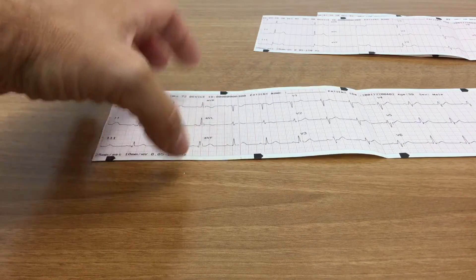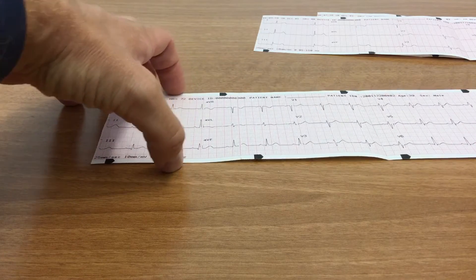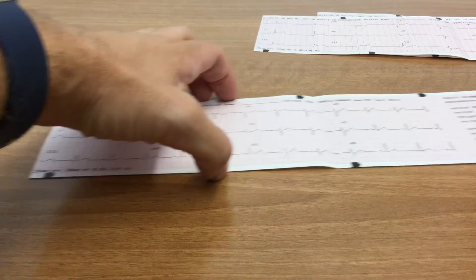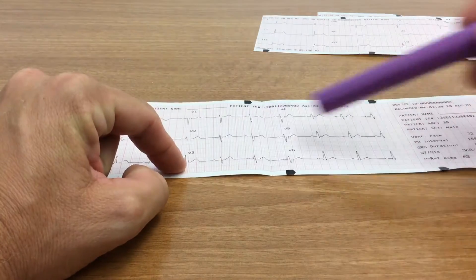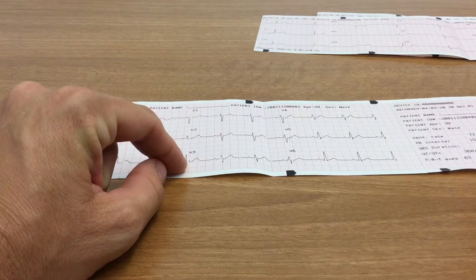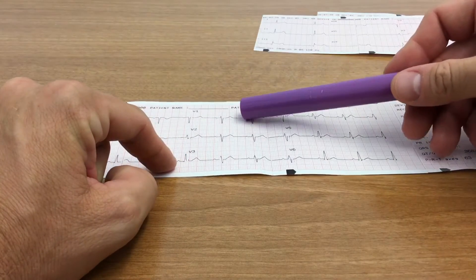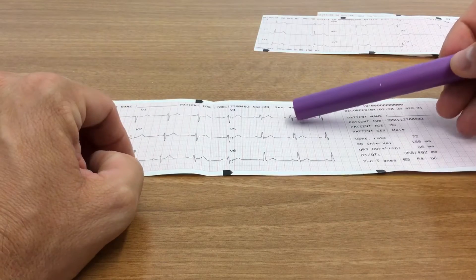So basically you have your limb leads here, your Einthoven's triangle here, you have your augmented leads here, and then the last two sections are your precordial leads, your V leads. So you start off with V1, V2, V3, V4, V5, and V6.